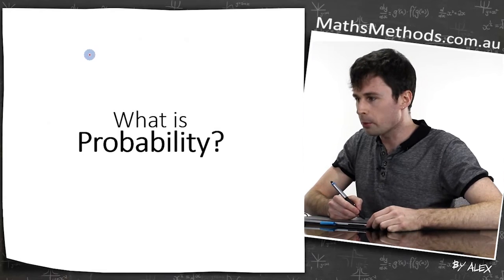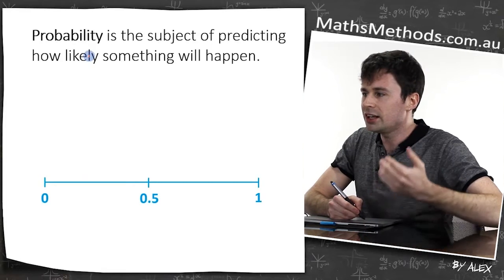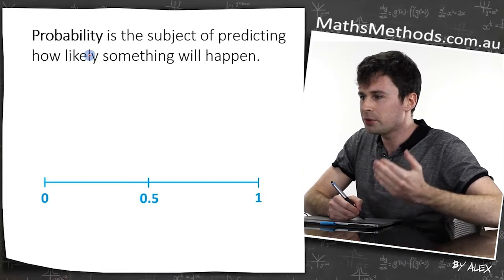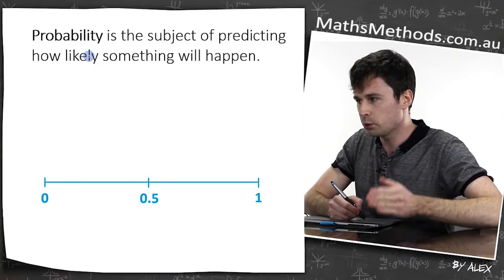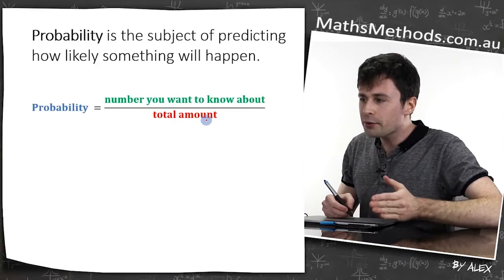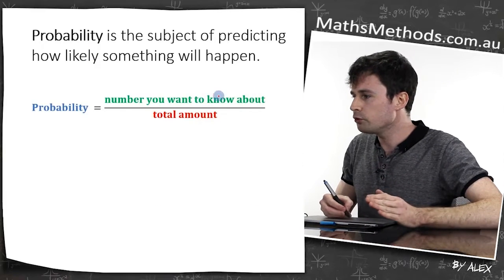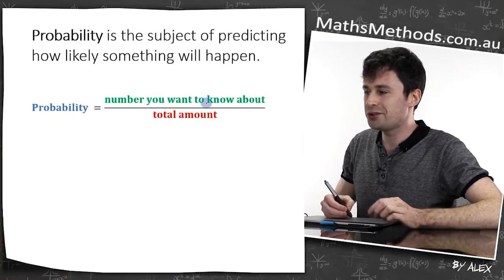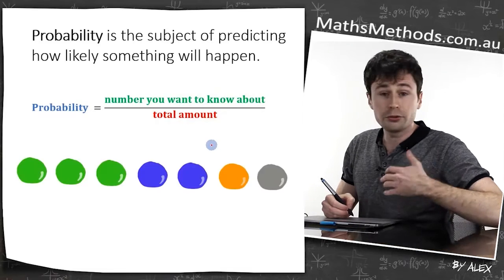So what is probability? Probability is the subject of predicting how likely something will happen. To figure out probability, find the number you want to know about and divide it by the total amounts.